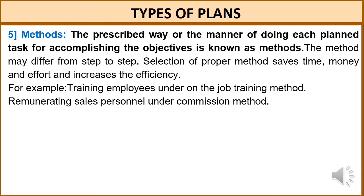The next type is methods. The prescribed way or manner of doing each planned task for accomplishing the objective is known as methods. The method may differ from step to step. A selection of a proper method saves time, money, and effort and increases efficiency. For example, training employees under on-the-job training, or remunerating sales personnel under a commission method.